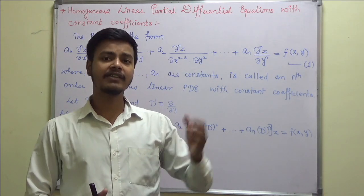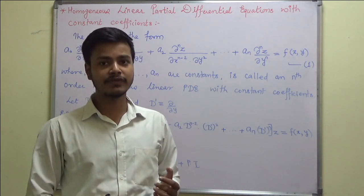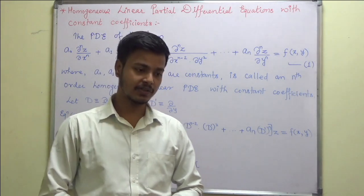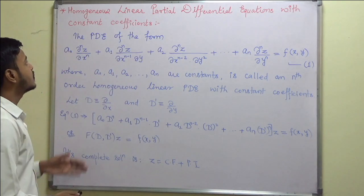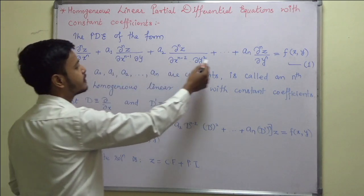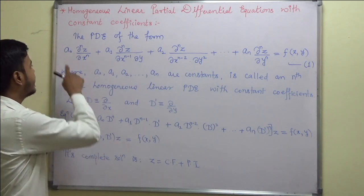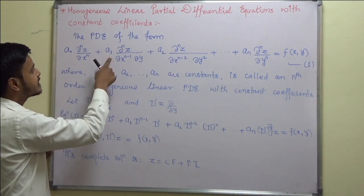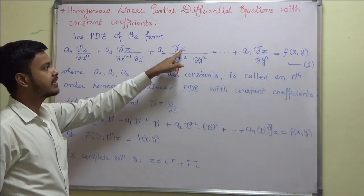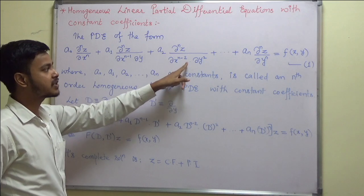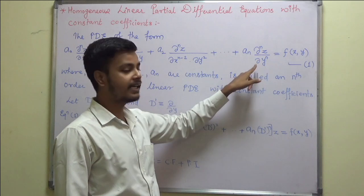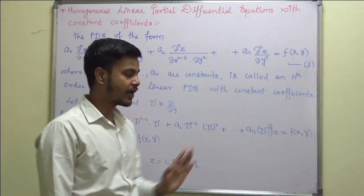Let us start with the introduction of this topic first, followed by the complementary function and the rule for complementary function. We have a PDE of the form — this is the general form of PDE: a₀ ∂ⁿz/∂xⁿ plus a₁ ∂ⁿz/∂xⁿ⁻¹∂y plus a₂ ∂ⁿz/∂xⁿ⁻²∂y² and so on, plus aₙ ∂ⁿz/∂yⁿ equals f(x, y).